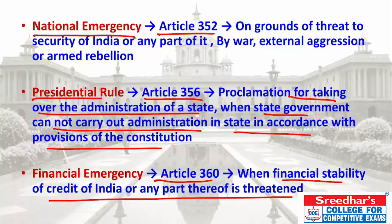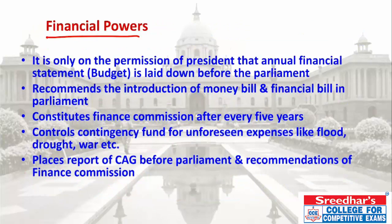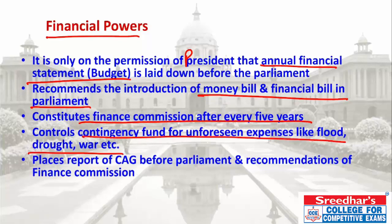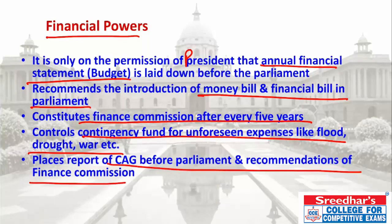Financial Emergency under Article 360 can be declared by the President when the financial stability of India or any part of it is threatened. Regarding financial powers, the annual financial budget or annual financial statement can only be presented in Parliament with the permission of the President. Money bills and financial bills can also only be introduced with the President's approval.